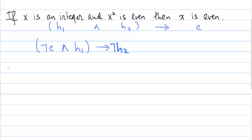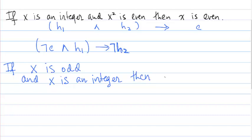Assume if x is odd and x is an integer, then x² is also odd.